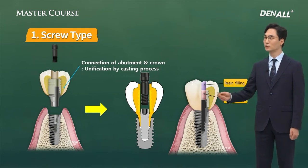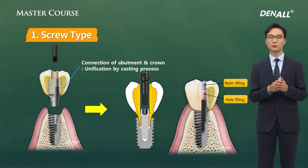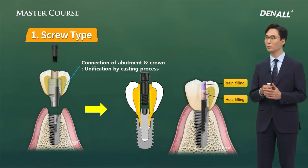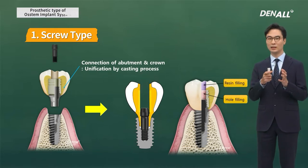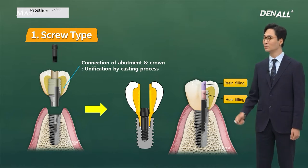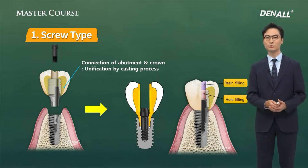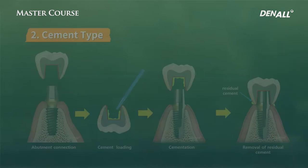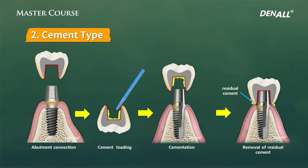For screw type, the abutment and prosthesis go through a casting process and become one piece. A screw is used to tighten the one-piece abutment and prosthesis with the implant body, and the screw hole is filled up using resin. For cementation type, the implant abutment is connected and a bonding agent is used to cement the crown on the abutment.